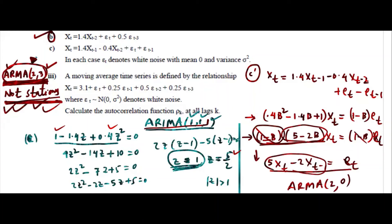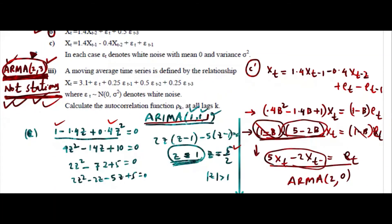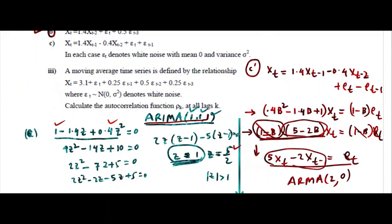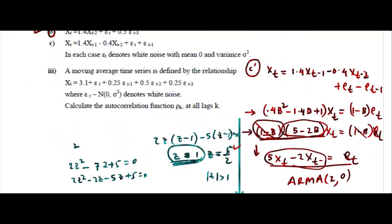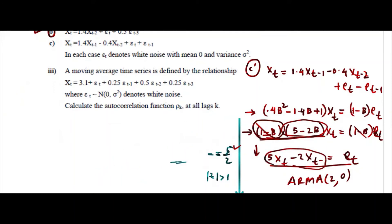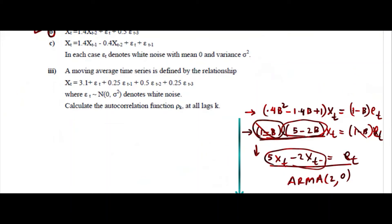Whatever common factor you have, you need to cancel those factors — that is what you need to remember here. Now, if you go to part 3. In part 3, we talk about finding autocorrelations for an ARMA3 process. We found autocorrelations separately for AR processes and for ARMA1; now this is ARMA3.